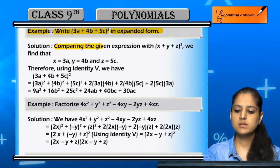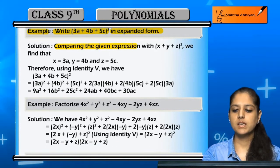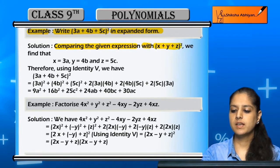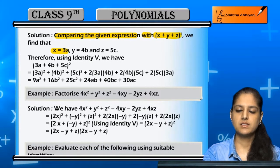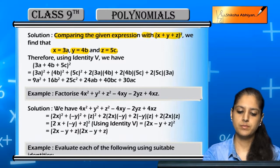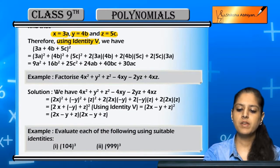If we compare this expression, the identity x plus y plus z whole square matches. In this case, x is 3a, y is 4b, and z is 5c, so we use the fifth identity.